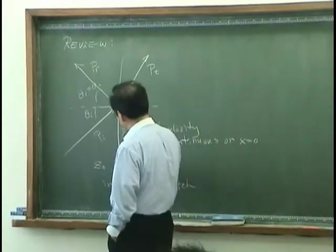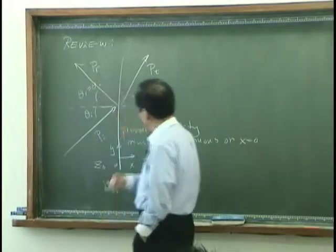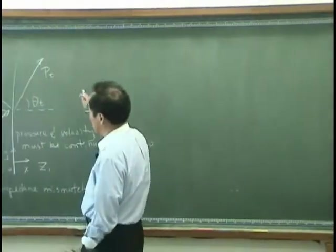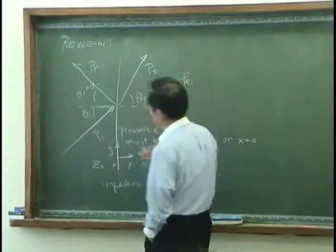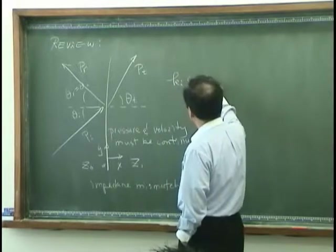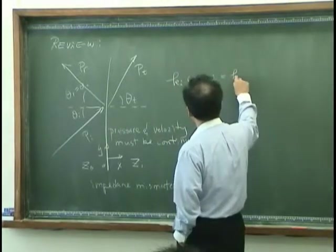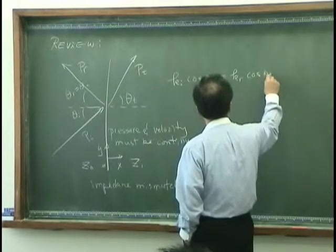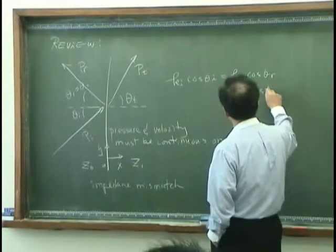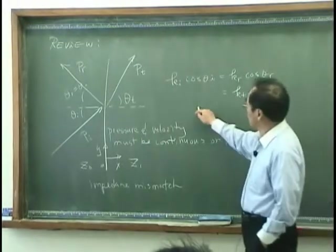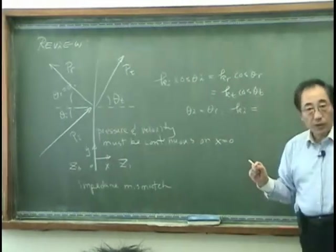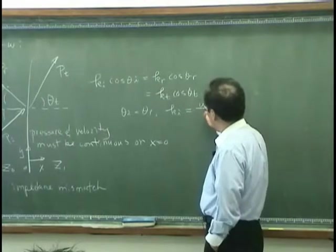These angles are not independent because the pressure and velocity must be continuous on x equals 0. That means we are using coordinates x and y. What we found was that k_i — the wave number of the incident wave — cosine theta_i has to be equal to k_r cosine theta_r, which has to equal k_t cosine theta_t. And theta_i equals theta_r.